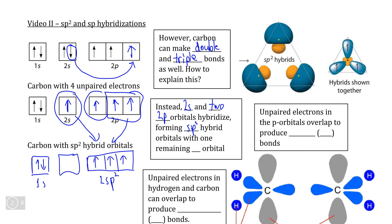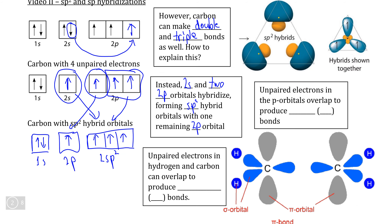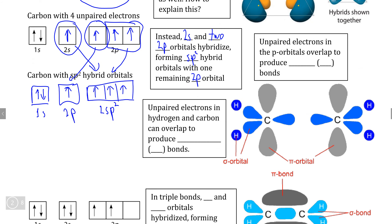The last remaining p orbital exists as a 2p orbital that is unhybridized, with a single unpaired electron. The result of this hybridization is that we have one remaining 2p orbital that is left unhybridized, and as we'll see, this is actually used to make the double bond.